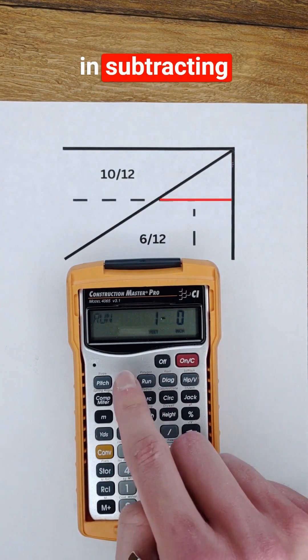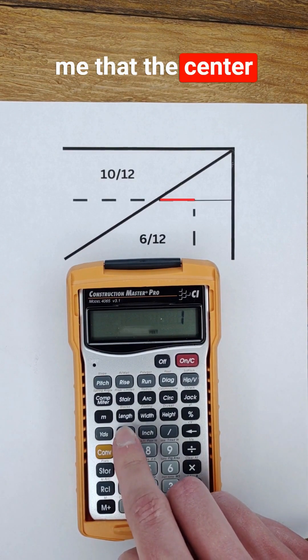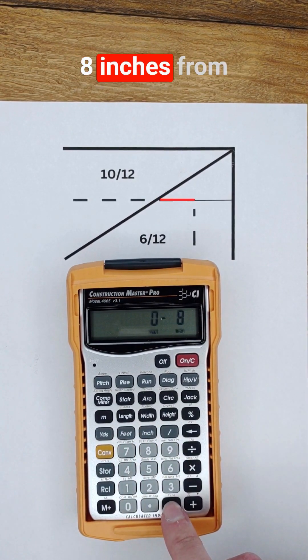Now pushing rise and subtracting the overhang, so minus 1 foot, shows me that the center of the hip will sit 8 inches from this plate corner.